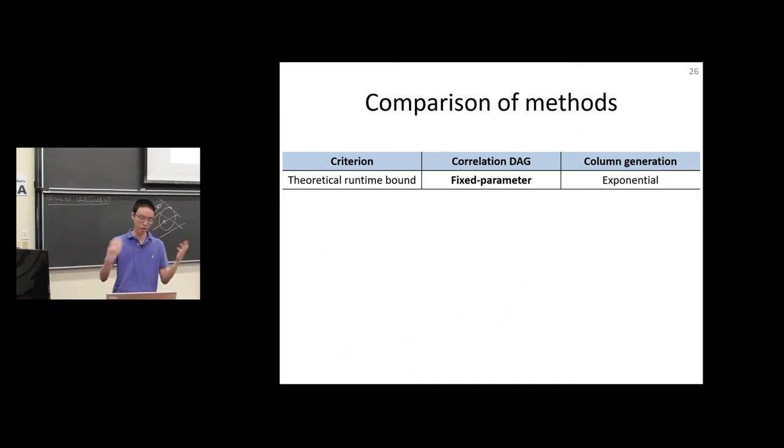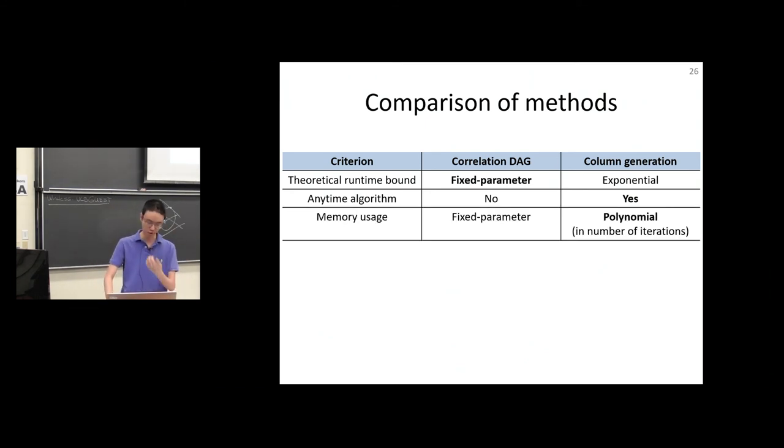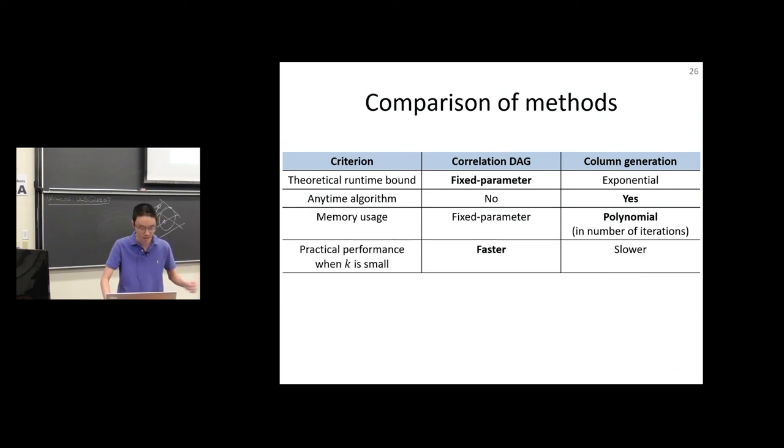A comparison of our methods: the correlation DAG has fixed parameter guarantees. Column generation does not. Column generation is an anytime algorithm. You can stop it at any time. The correlation DAG has to build a whole correlation DAG upfront. When k is small, correlation DAG will be faster. When k is large, column generation will be faster.